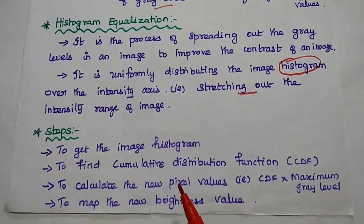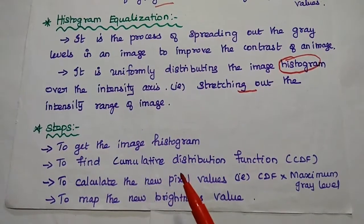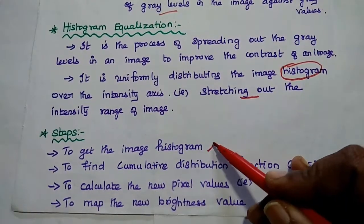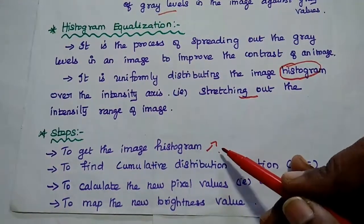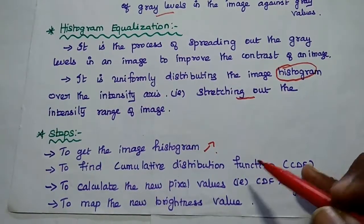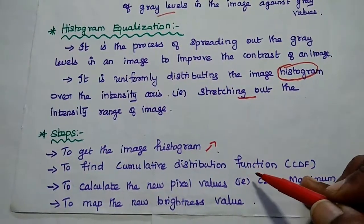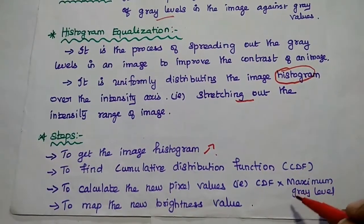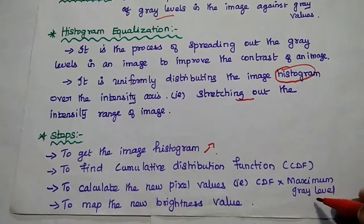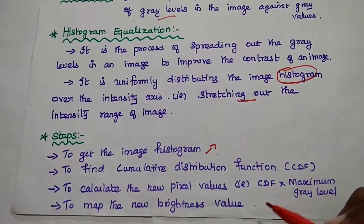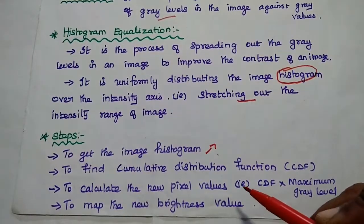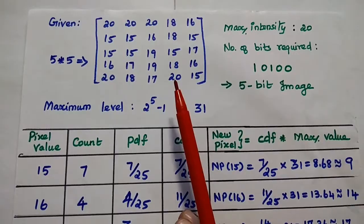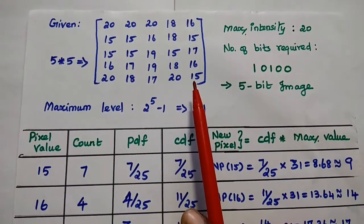So first we describe what is meant by histogram equalization, then we give the steps. The first step is to get the histogram — the number of occurrences of the gray levels in the given image. Next, find the cumulative distribution function (CDF). Then calculate new pixel values using the formula: CDF multiplied by the maximum gray level. Finally, map the new pixel values to the old pixel values.